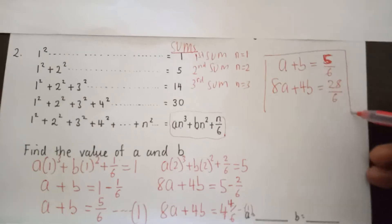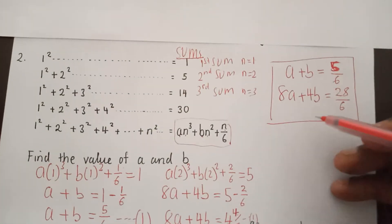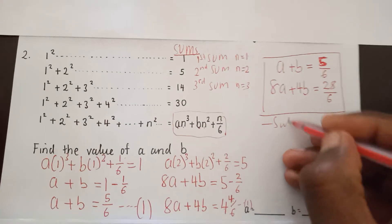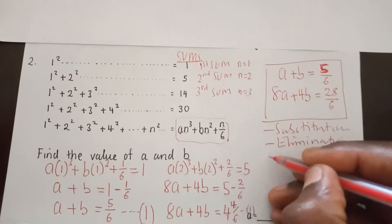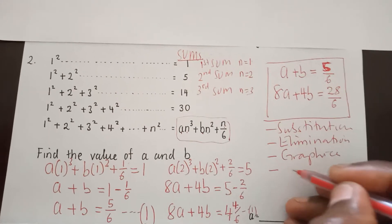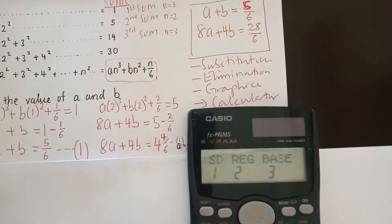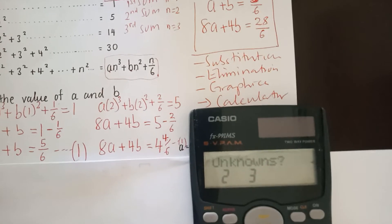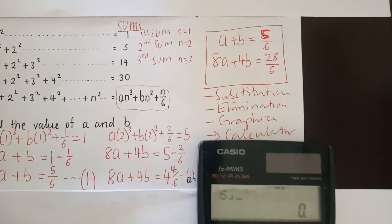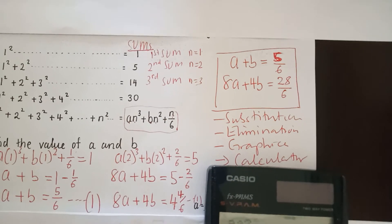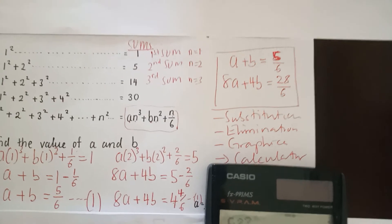I take these two equations and work them out simultaneously. There are many ways of solving simultaneous equations — you can use substitution, elimination, or graphical methods. For now, we are going to use the calculator. I enter the equations: for equation one, the value of a is one, b is one, and c is five over six.